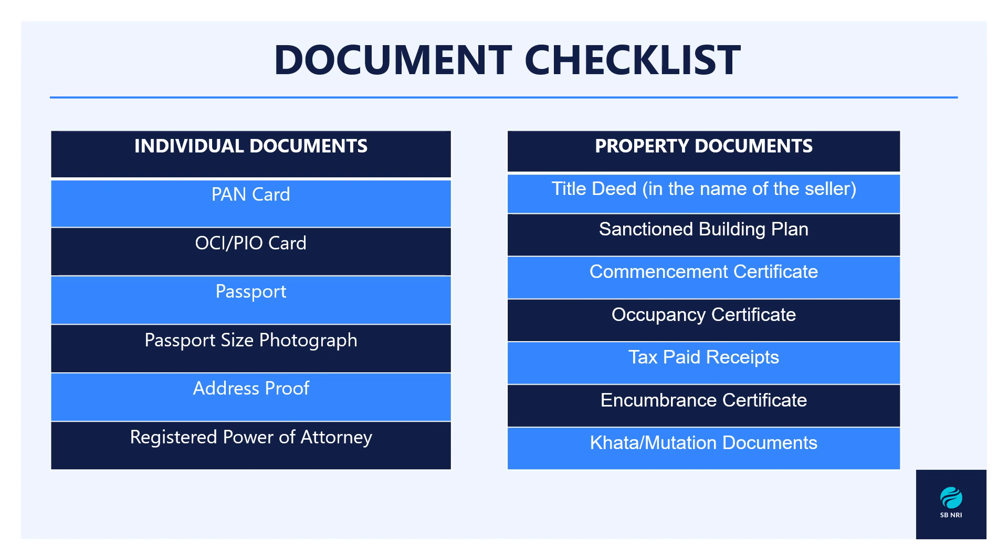The second aspect is the documents to look for from the property's perspective. You should look for a title deed in the name of the seller, the sanctioned building plan, commencement certificate, occupancy certificate, tax paid receipts, encumbrance certificate, as well as the Khata and mutation documents of the property.